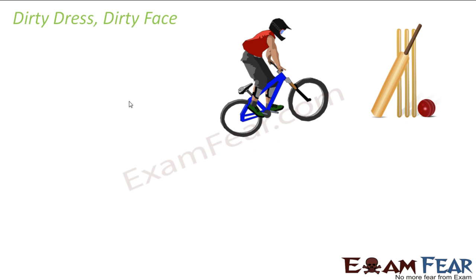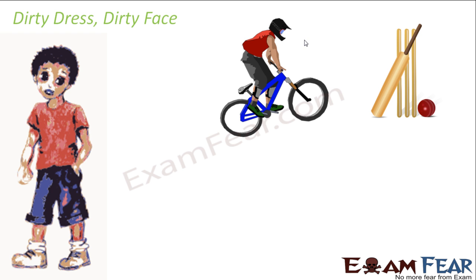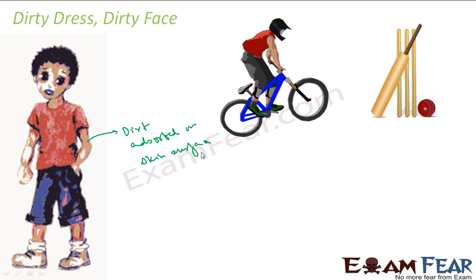Let me give some examples of adsorption in our day-to-day life. The first example: in the morning your skin is totally clean, you go out to play or go to school, and by the time you come back your face is dirty. The dirt has been adsorbed on the skin surface — it has not gone inside your blood, it's only on the skin surface.